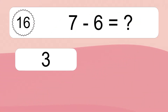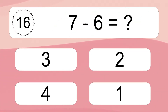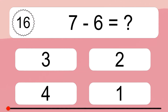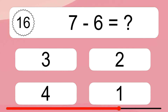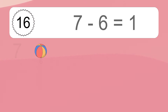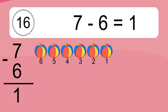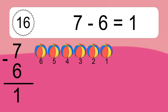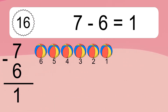7 minus 6 equals what? 7 minus 6 equals 1. Let's count it: 6, 5, 4, 3, 2, 1.